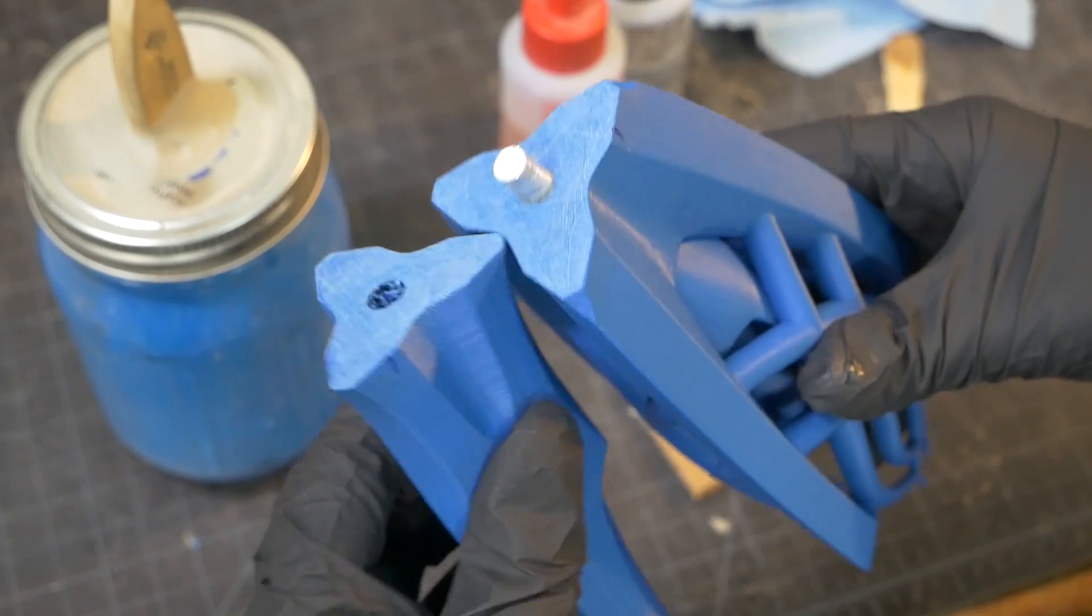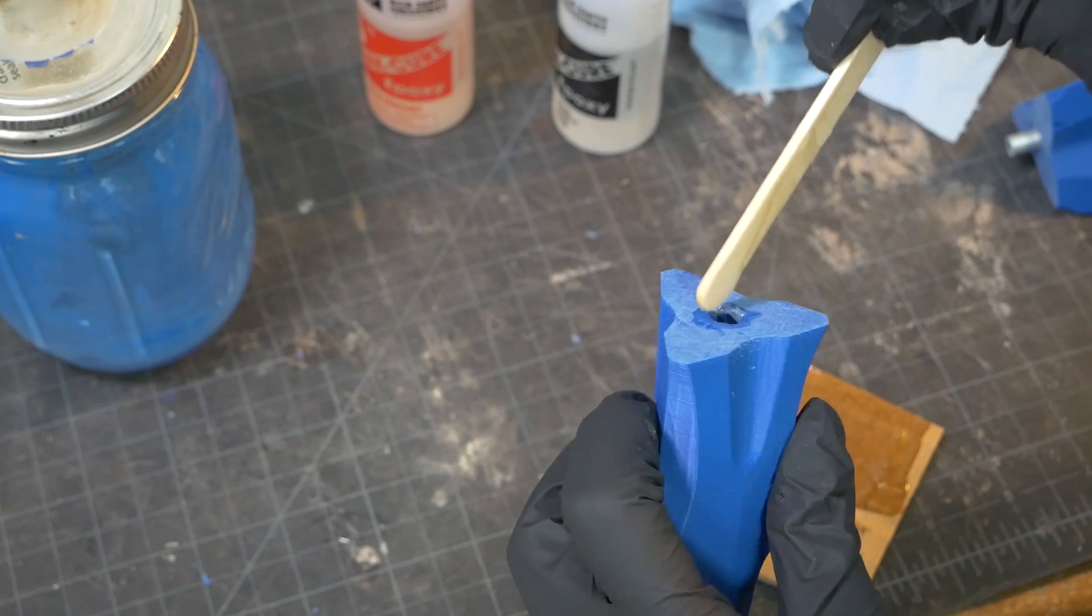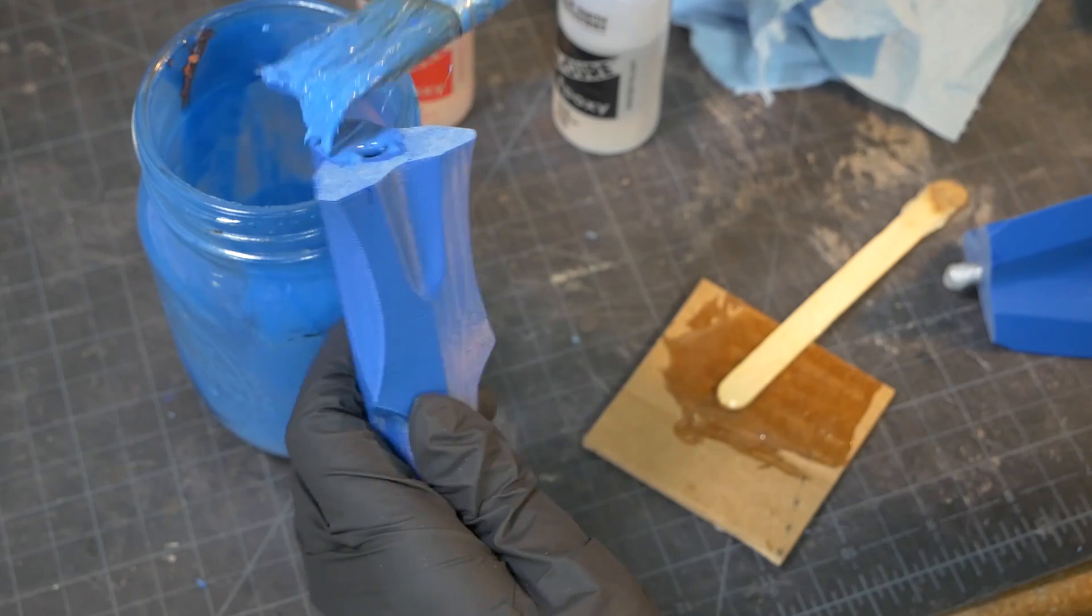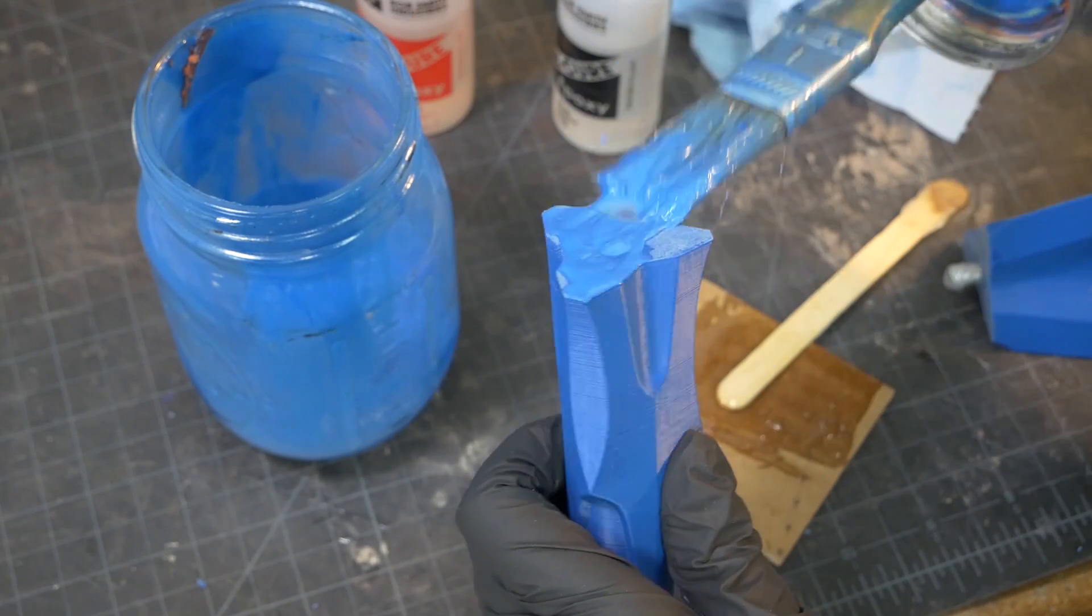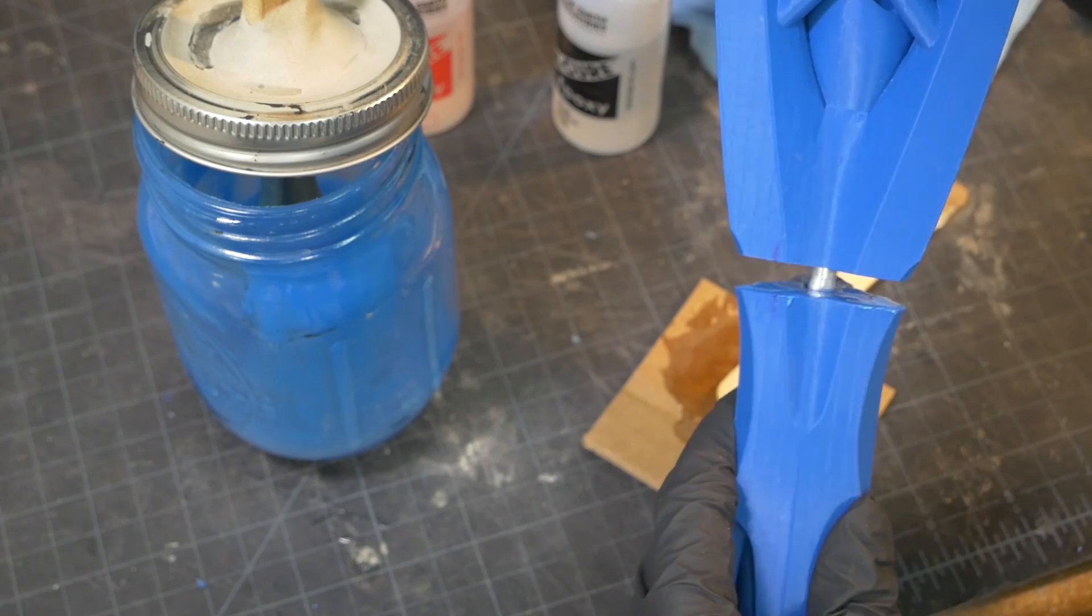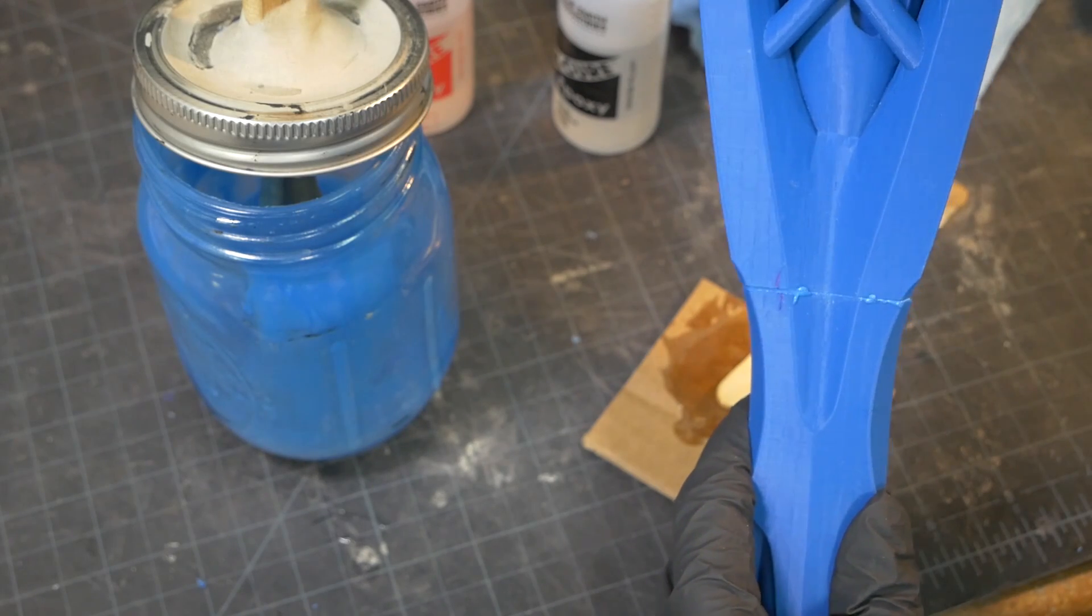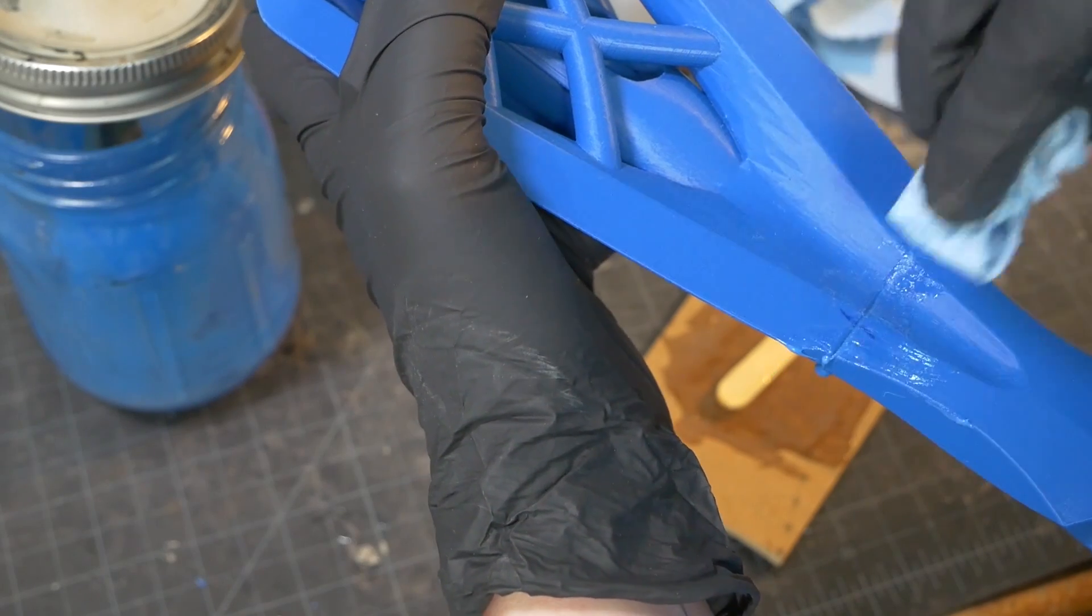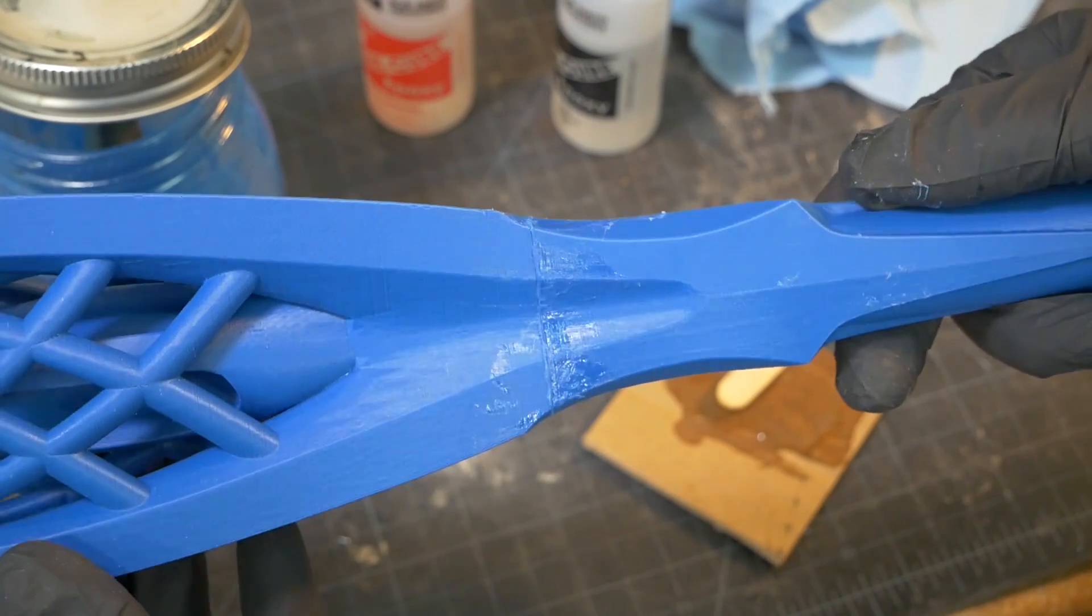A little epoxy was mixed and added to the dowel connection, but the rest of the staff was glued together with the acetone and ABS slurry. I always wear gloves and wear a respirator when working with acetone. Before the mixture set, I wiped away the squeeze out as much as I could.